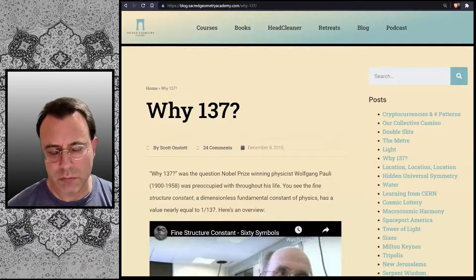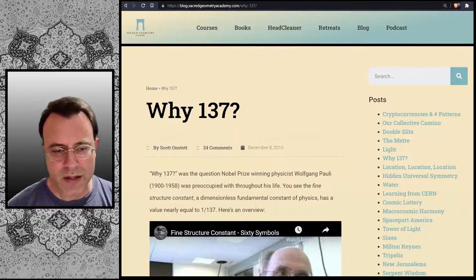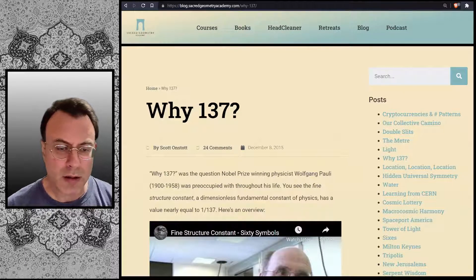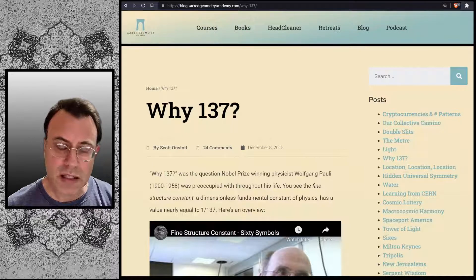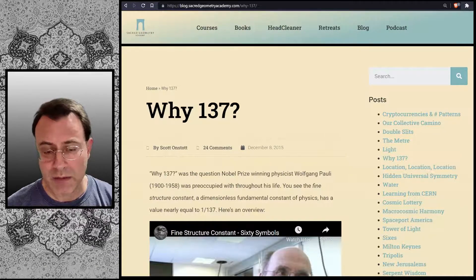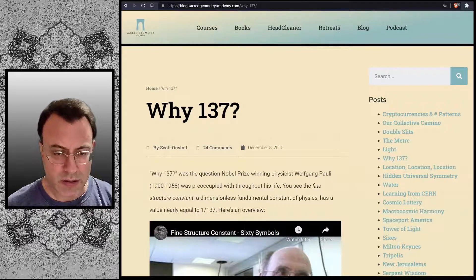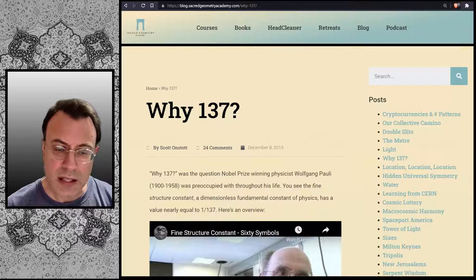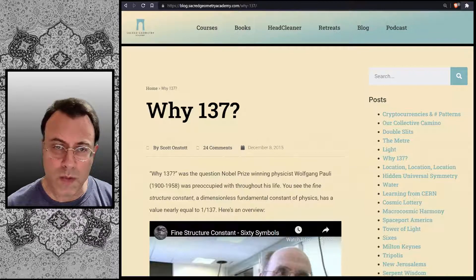Why 137? This was the question Nobel Prize-winning physicist Wolfgang Pauli, who lived from 1900 to 1958, was preoccupied with throughout his life. You see, the fine structure constant, a dimensionless fundamental constant of physics, has a value nearly equal to 1 over 137.